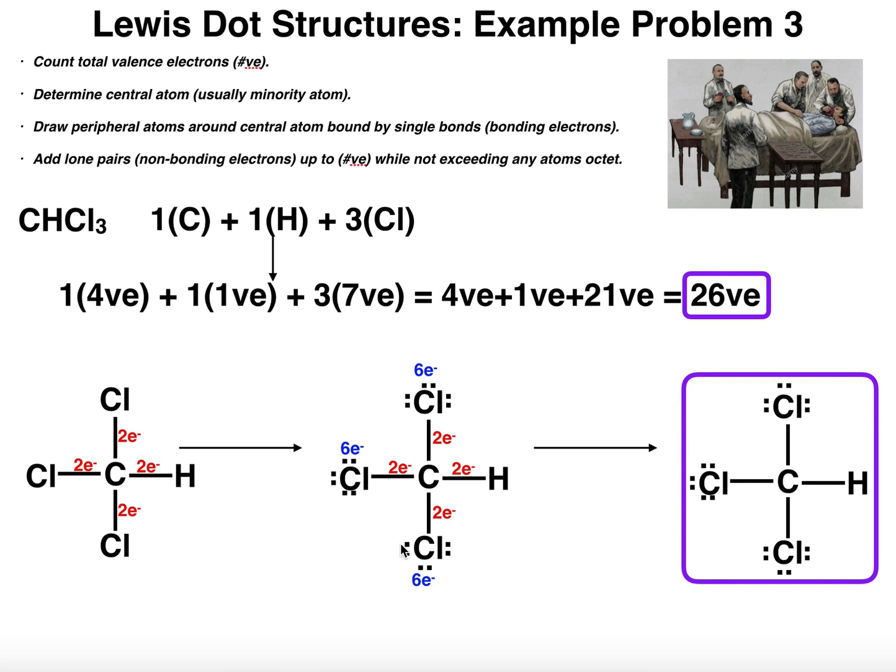And so the question then is, do I put any on the hydrogen? Well, when we actually add up these, we'll get to 26, but in any case, we never put lone pairs on hydrogen. You will never see that unless the hydrogen is a lone atom, in which case there's really no point in drawing the Lewis structure. But you will never put any lone pairs ever on hydrogen.